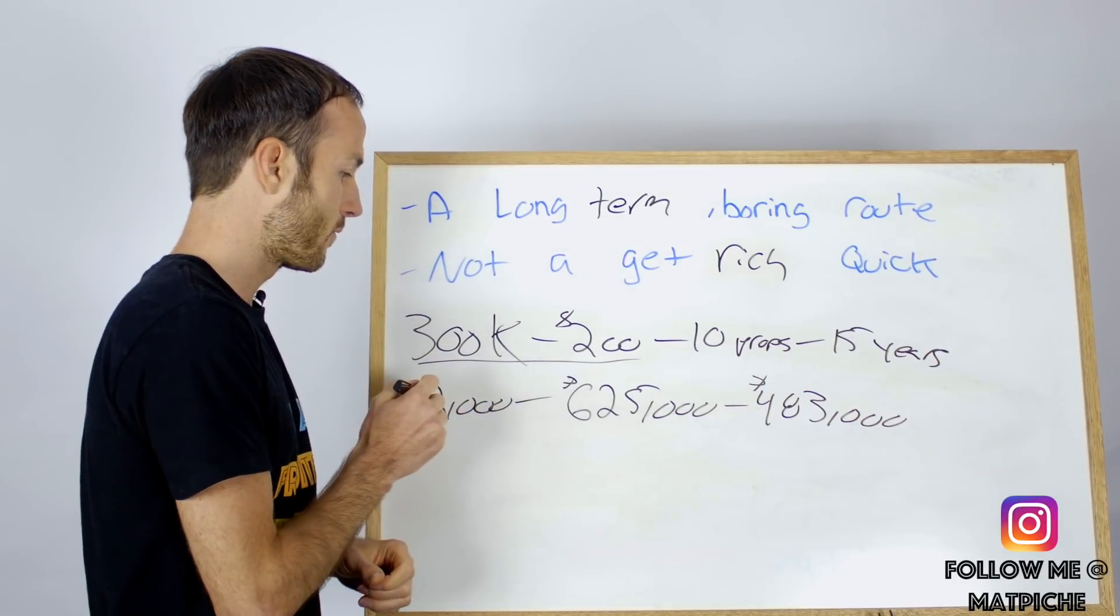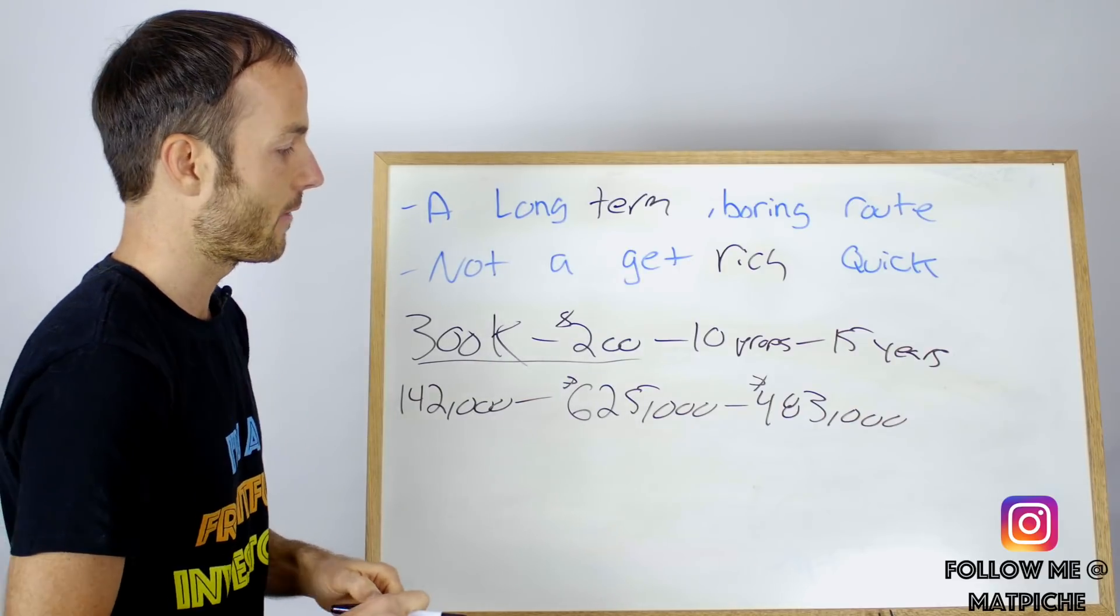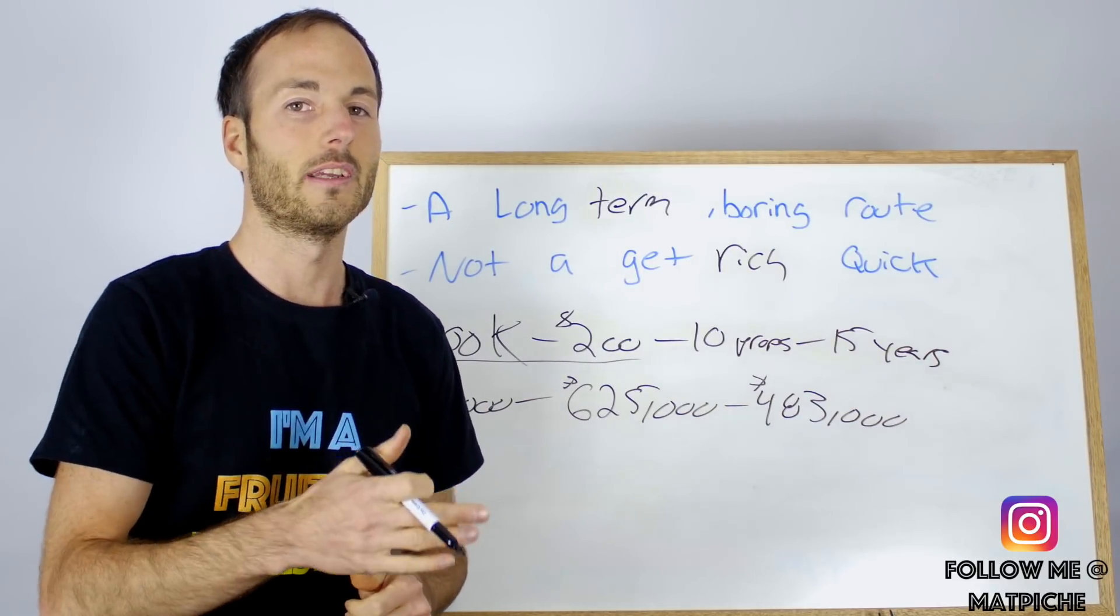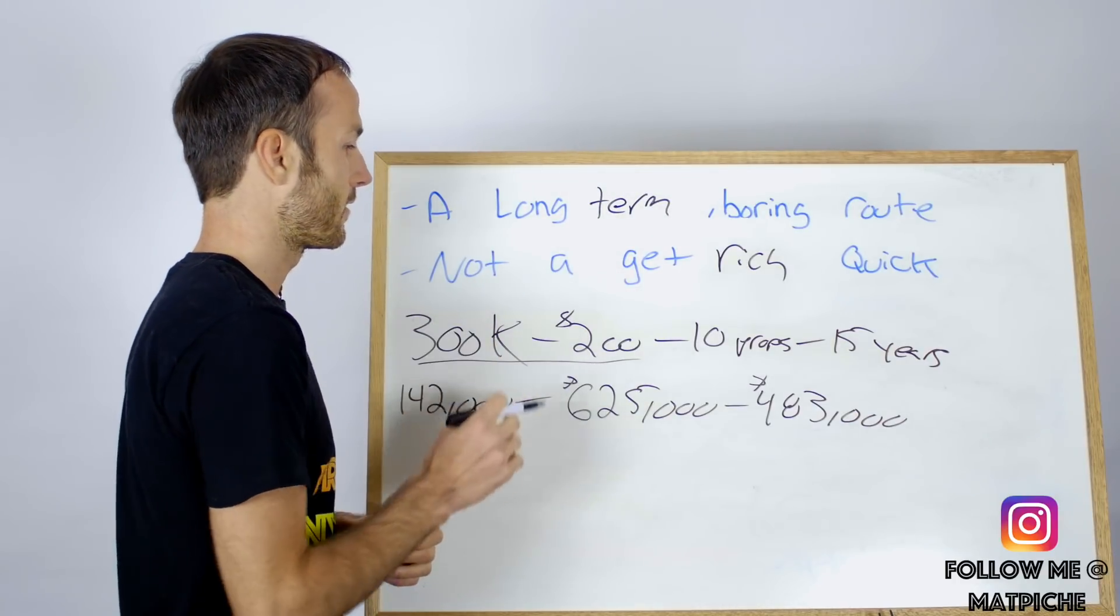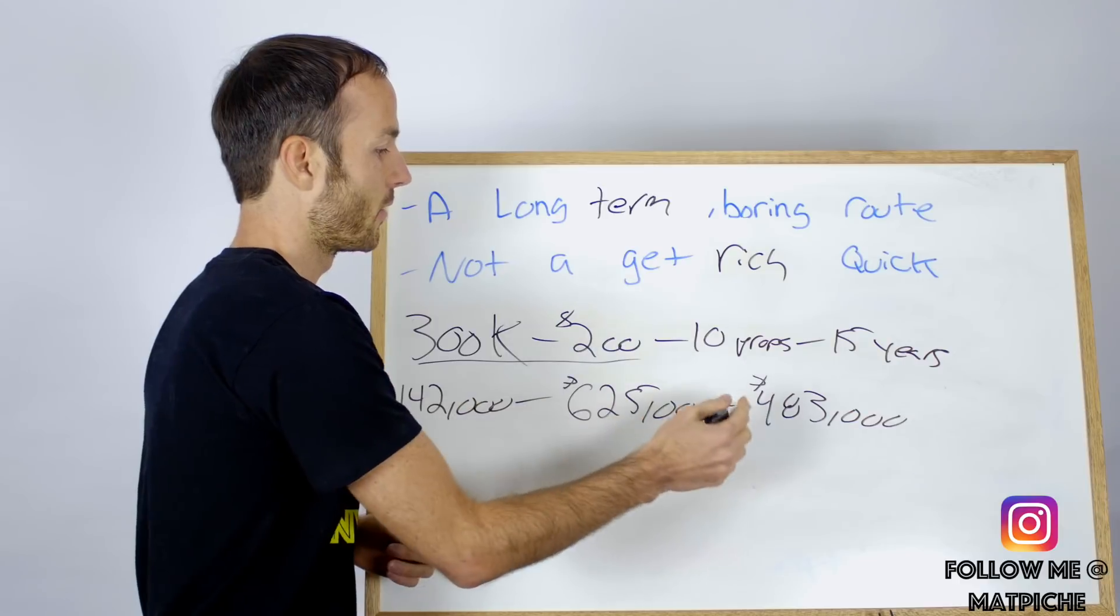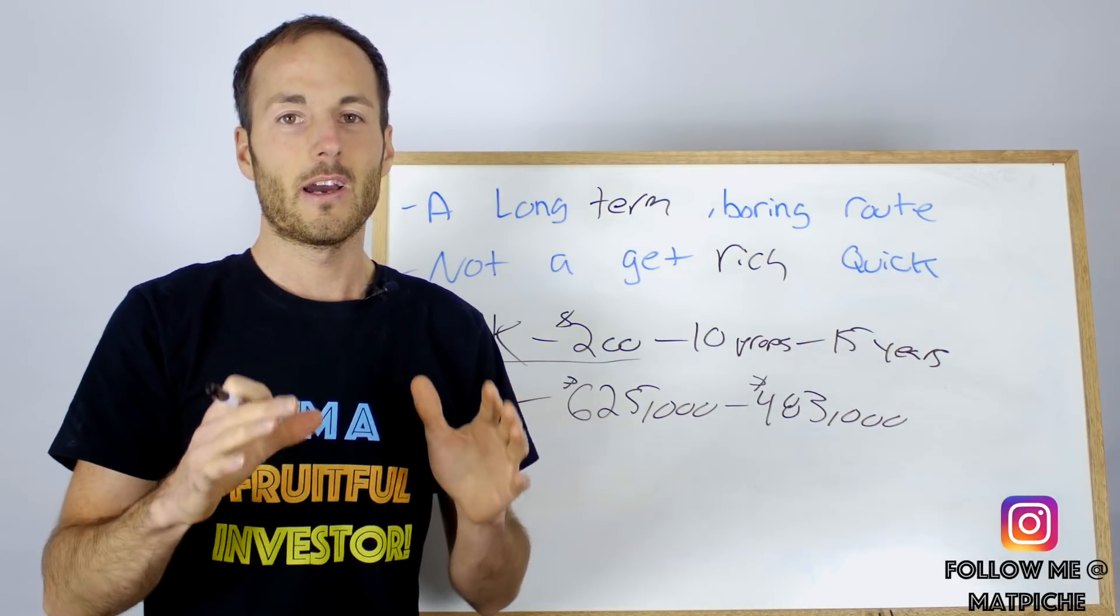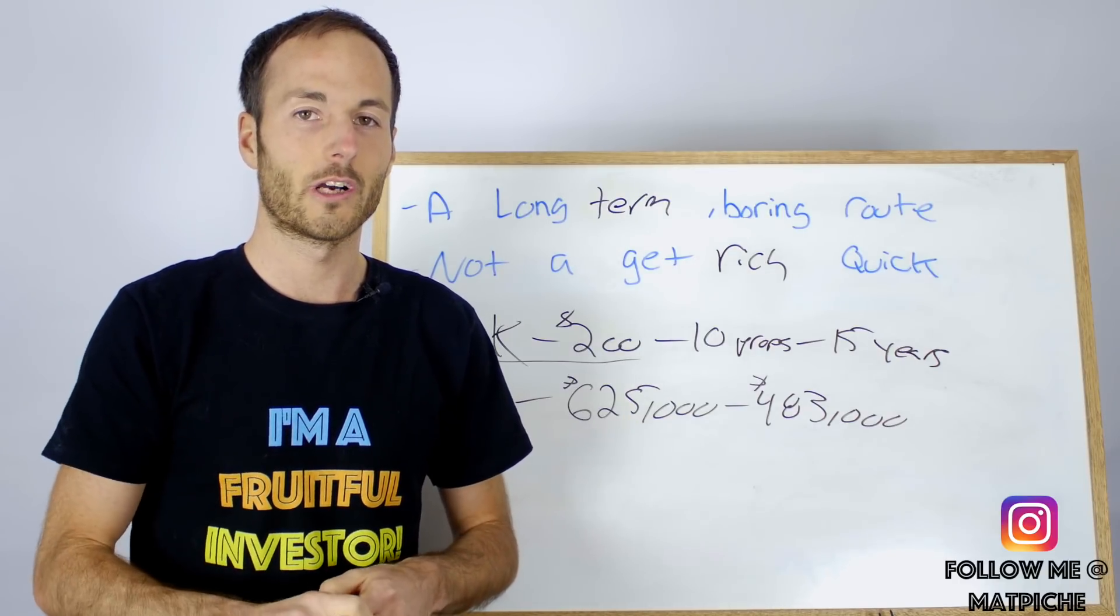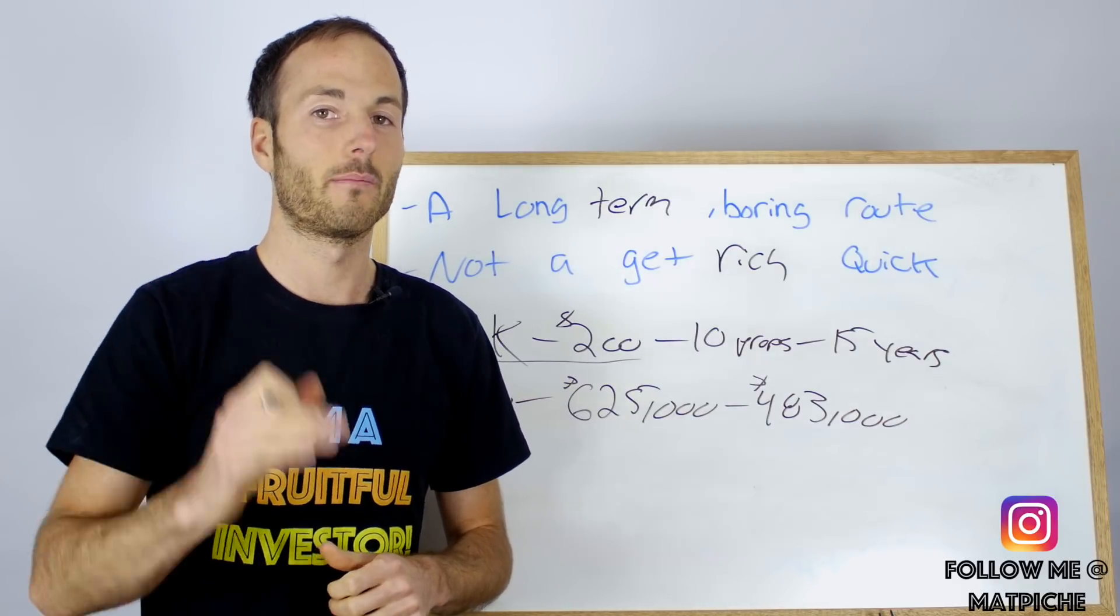Now I know what you're thinking - if I buy a property in year 3, year 5, year 7, year 10, it's not gonna be $300,000, it's gonna be more than that, so this number is gonna be a little bit skewed. Yes, you're right, but also I'm not accounting for the forced appreciation.